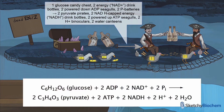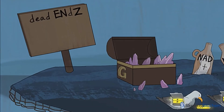Before we start the ride, turn your attention to that central island. The whole island represents the net equation for glycolysis. To the left of that suspiciously arrow-shaped shovel, you'll see one glucose candy treasure chest, two powered-down ADP robo-seagulls, and two empty NAD Plus bottles. To the right are two pyruvate pirates, two ATP-powered robo-seagulls, two full NADH energy drinks, two water canteens, and two H-plus binoculars. These symbols are going to come up throughout our glycolysis duology, so keep your eyes peeled for them.